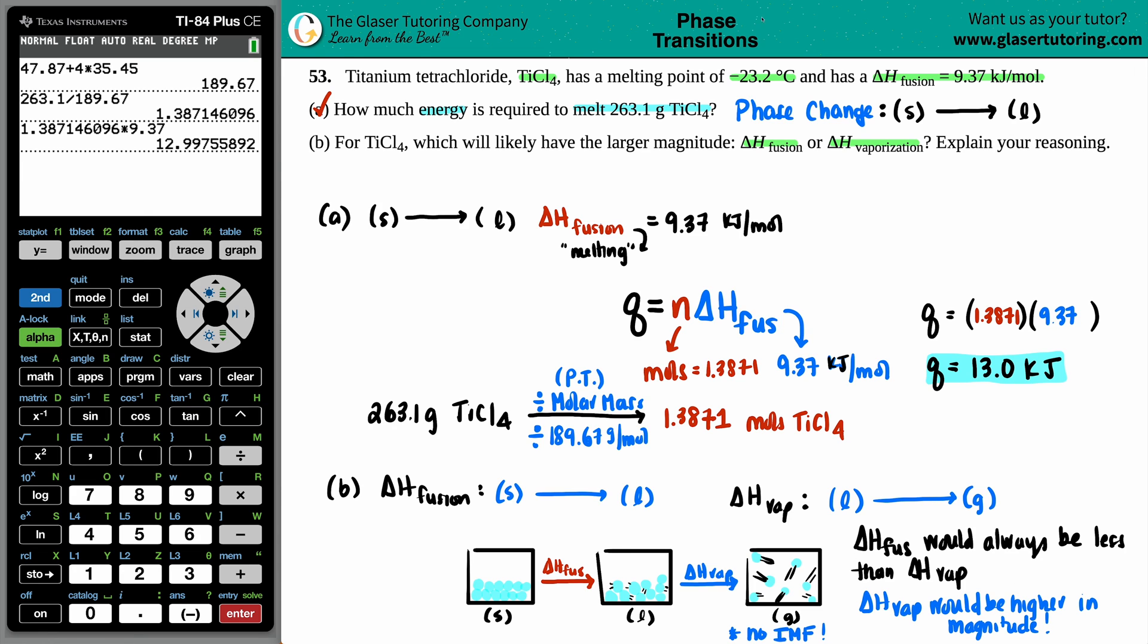So in this case, your delta H vape would be higher in magnitude. Magnitude is just a fancy way for saying number. So it would be higher in magnitude. It would be higher in number. And this is generally for all substances that your vaporization, your enthalpy of vaporization would always be much larger because you are overcoming all of your intermolecular forces. They're acting as independent molecules and they have no attraction towards the other molecules. So that's the reasoning behind that one. And you could also give the little picture as well. And letter B is done. And this question is done.